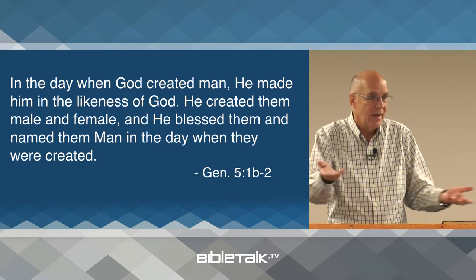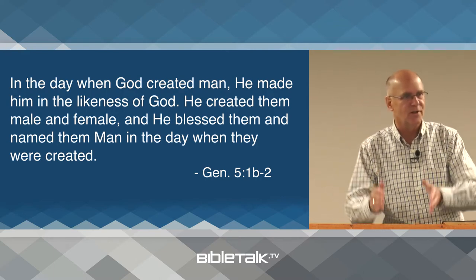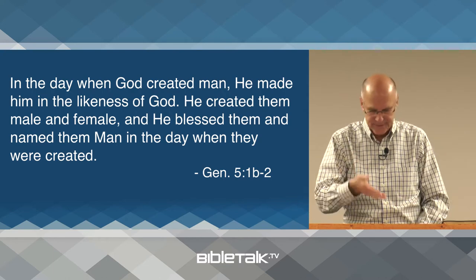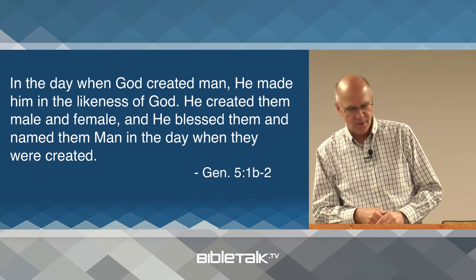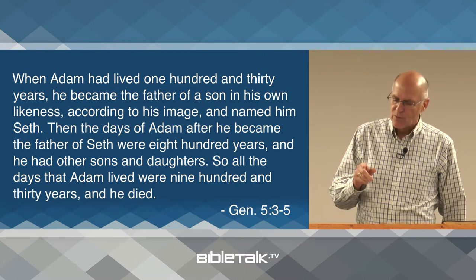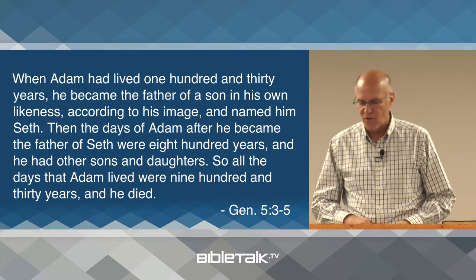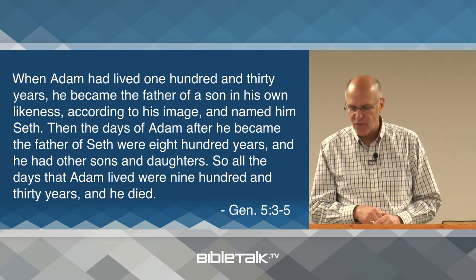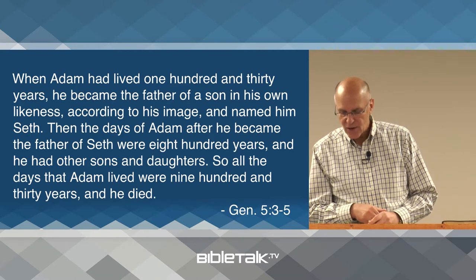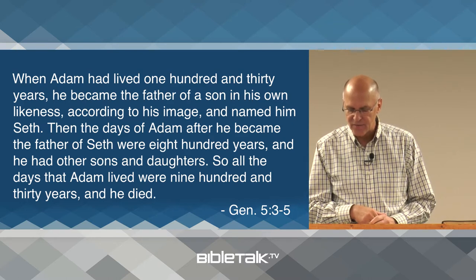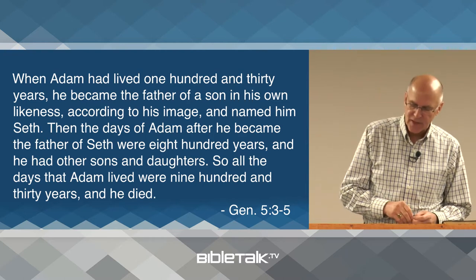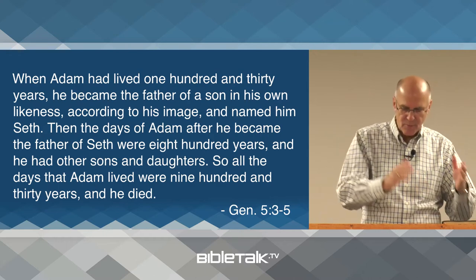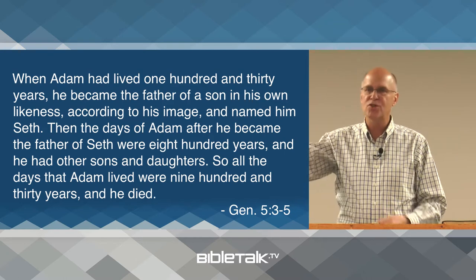Isn't that how we do things? Even in my lessons — we did one last week, we start this week — I take the first minute or two to summarize and give a little idea of what has gone before, and then we move forward. It's exactly what the writer has done here. Verses 3 to 5 say: 'When Adam had lived 130 years, he became the father of a son in his own likeness, according to his image, and named him Seth. Then the days of Adam after he became the father of Seth were 800 years, and he had other sons and daughters. So all the days that Adam lived were 930 years and he died.' The writer pronounces Adam's obituary statement.